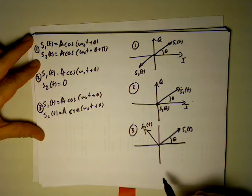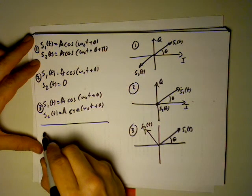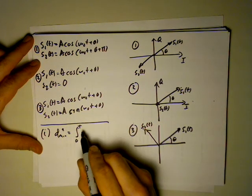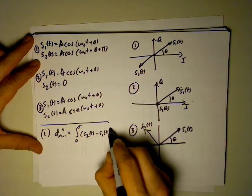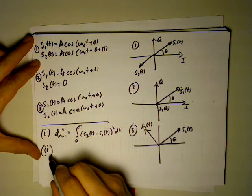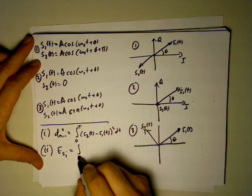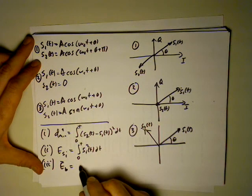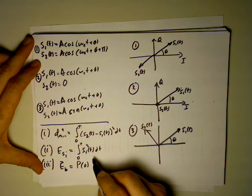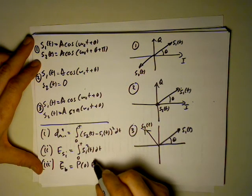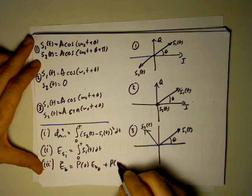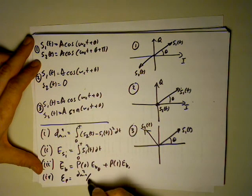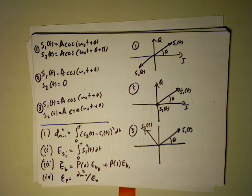To summarize the calculation procedure: Step 1, calculate D_min by integrating the squared difference of the two waveforms over the period. Step 2, calculate the individual symbol energies. Step 3, calculate the average bit energy as P(0)·E_S2 + P(1)·E_S1. Step 4, apply the power efficiency expression: epsilon_p = D_min² / E_B-bar. That gives you the power efficiency for your BPSK modulation.